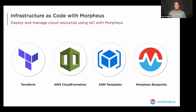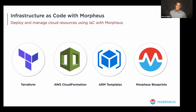The Morpheus platform supports various infrastructure-as-code integrations: Terraform, AWS CloudFormation, ARM templates, as well as Morpheus blueprints — using languages like HCL, JSON, or YAML to declare resources. This release includes enhancements to both the Terraform integration and the CloudFormation integration.